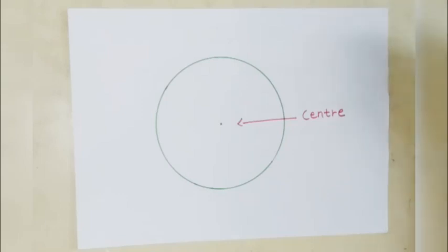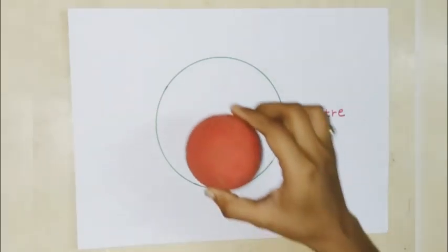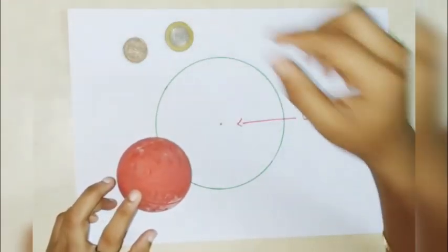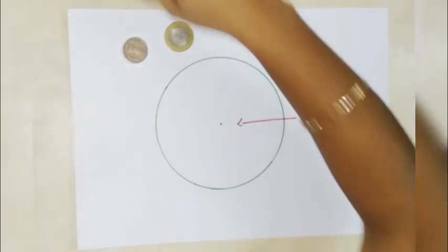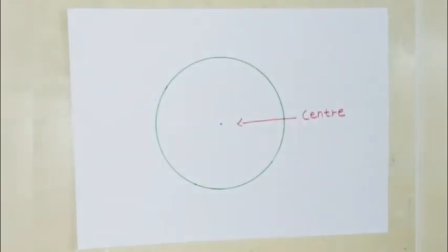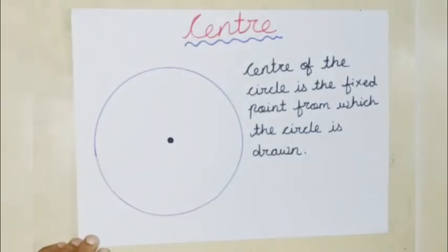Can you all tell me some circular objects? Here, I will show you some circular objects like a ball, these coins, and a bangle. These are the circular objects. Now, one by one, we will learn a few concepts about the circle.